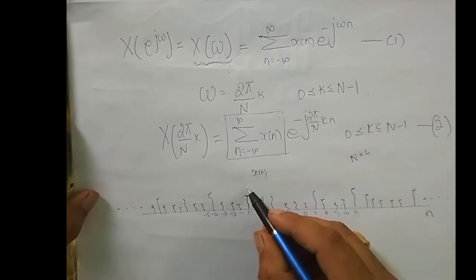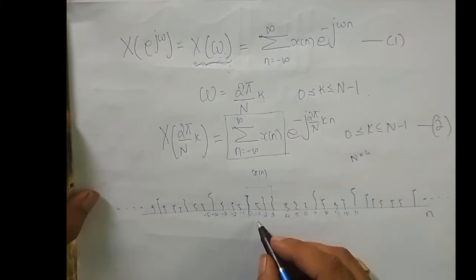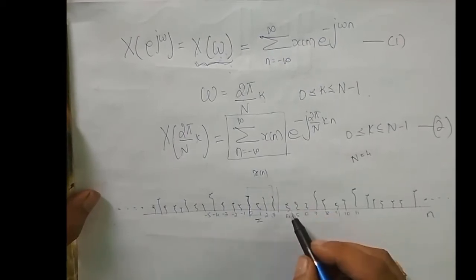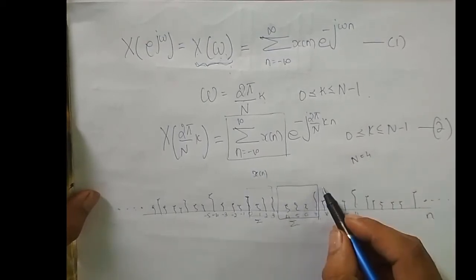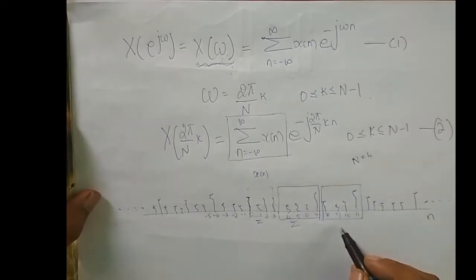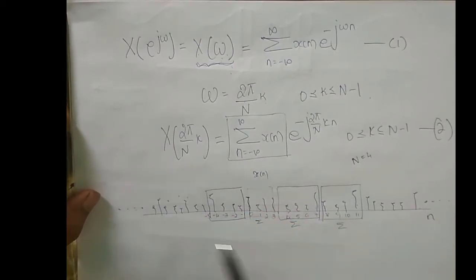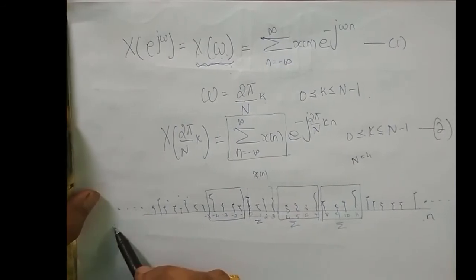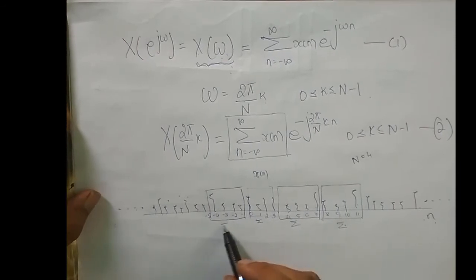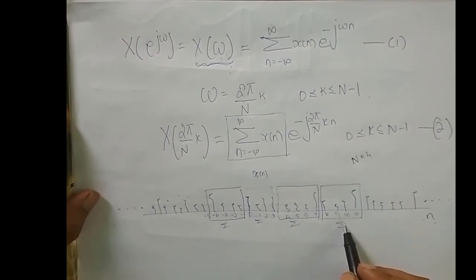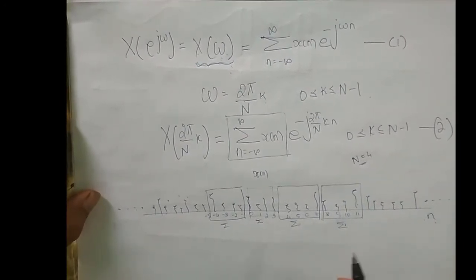For example, say I put N equal to 4. So this is one summation containing 4 samples: 0, 1, 2, 3. This is one summation. And the next is another 4 samples: 1, 2, 3, 4 — another summation. Again 1, 2, 3, 4 — this is another 4 samples — and this goes on. So x of n, where n varies from minus infinity to plus infinity, is going to be split into infinite summations, where each summation contains N samples. I have taken N equal to 4 to convince you, but N can be anything.